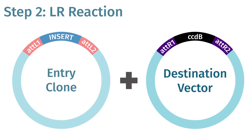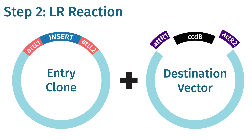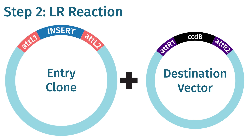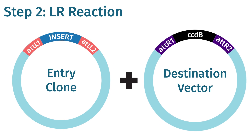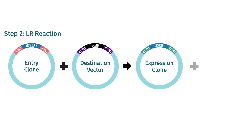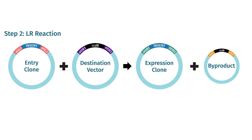To go from entry clone to expression clone, use LR clonase to combine your entry clone with a destination vector. The AT-L sites will recombine with the AT-R sites, moving your fragment of interest from the entry clone to the destination vector. This reaction creates the final expression clone, which contains the insert flanked by AT-B sites, ready for transformation and expression in a host organism.